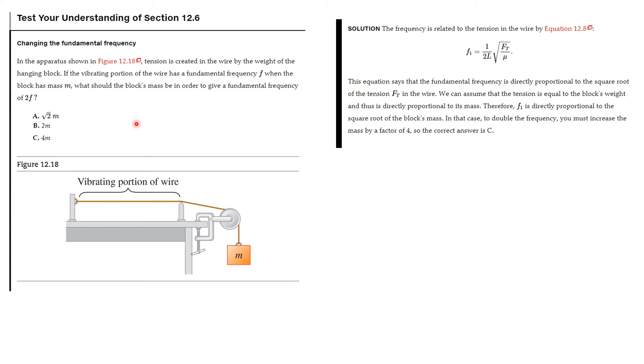Let's test our understanding of this section. In the apparatus shown in this figure, you've got a wire fixed here but held taut by this mass. Then you pluck that, so this is the vibrating portion of the wire. Tension is created in the wire by the weight of the hanging block. If the vibrating portion has a fundamental frequency F when the block has mass M, what should the block's mass be to give a fundamental frequency of 2F?